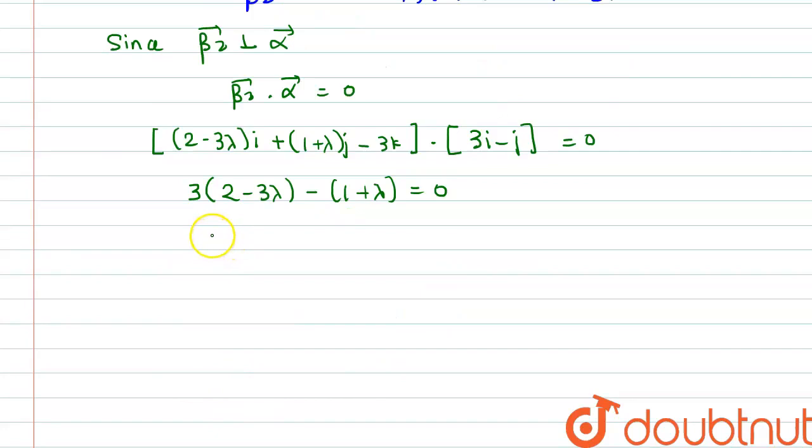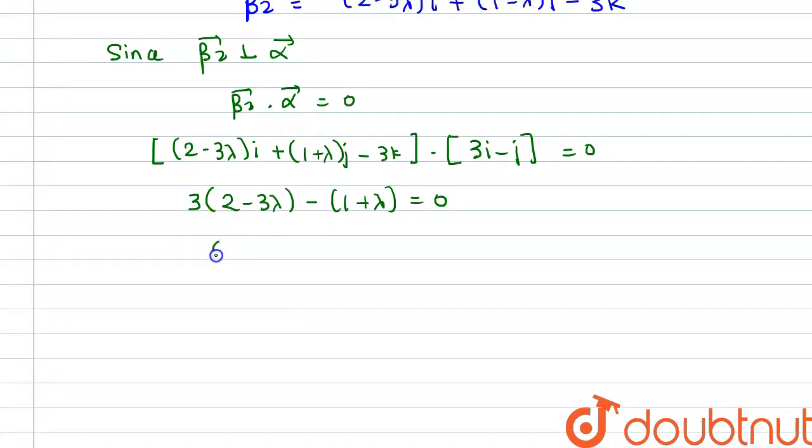So on simplifying we have 6 minus 9 lambda minus 1 minus lambda is equal to 0. So we have 5 minus 10 lambda is equal to 0. So from this we have the value of lambda as 1 by 2.